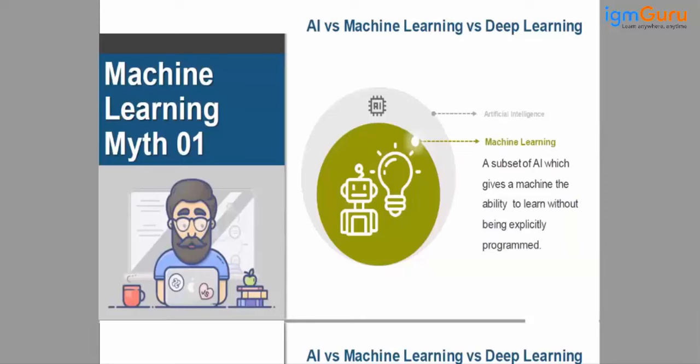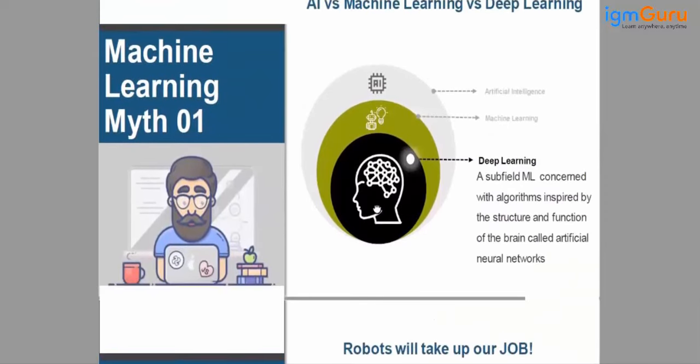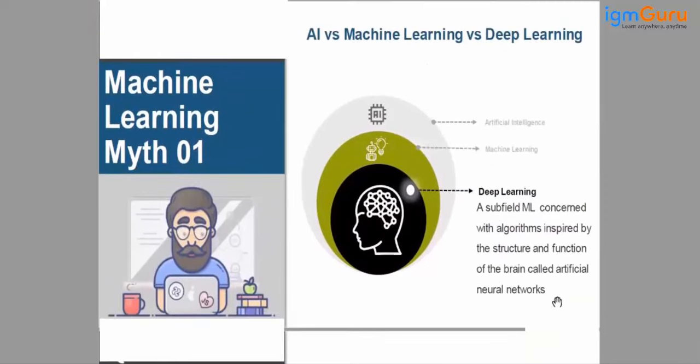And deep learning is again a subfield of machine learning, and it is actually connected with how the brain works. Deep learning uses a model or algorithm that is inspired by the brain. They are called artificial neural networks.